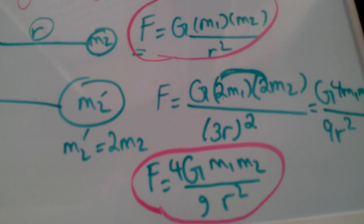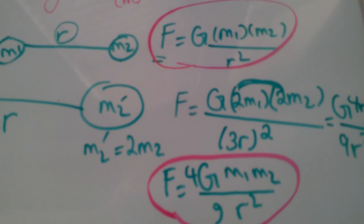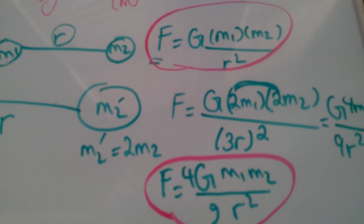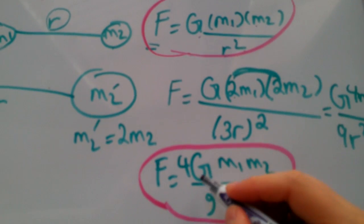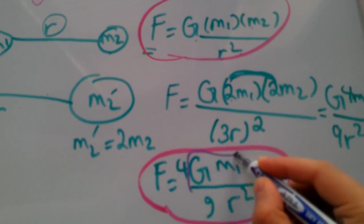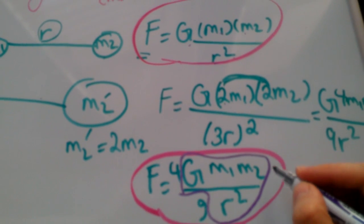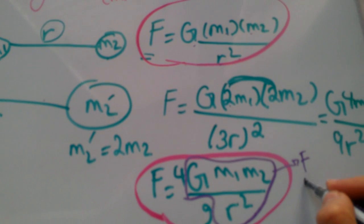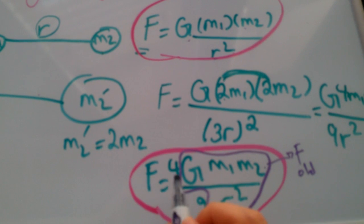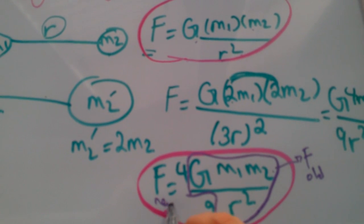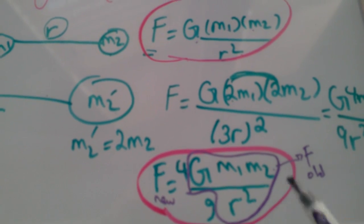Now if you take a closer look at how these two are related to one another, you'll see that you have G m1 m2 over r squared exactly here. This is your old F. Now the new F, the second case, is 4 ninths of before.